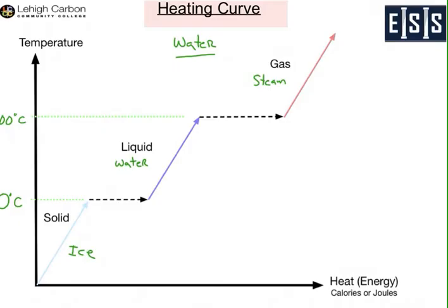So there's a lot of information in this curve. If you're below zero degrees centigrade, you're down here in this light blue line — you have solid ice. And as you give it energy, the temperature rises, moving up as the green arrow shows. You still have solid ice, but that ice is getting warmer.